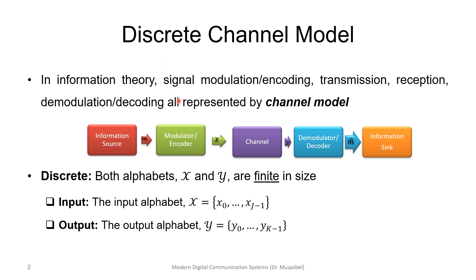In information theory, we can represent the channel. We have discrete channels. We call the channel discrete if both the input and output, both alphabets X and Y, are finite in size. There are discrete options for X, discrete options for Y. The input alphabet is X, which includes certain discrete symbols, and the output alphabet has discrete options. This is called a discrete channel.